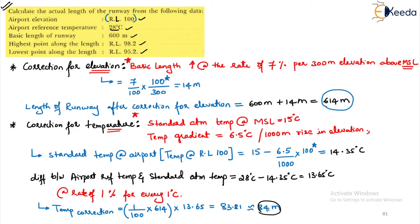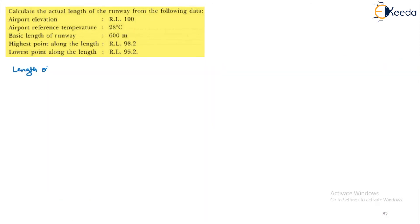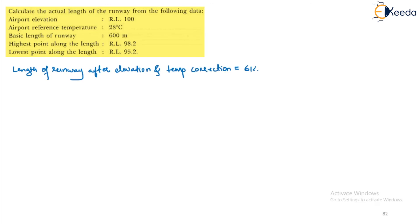The length of runway after elevation and temperature correction is: 614 + 84 = 698 meters.